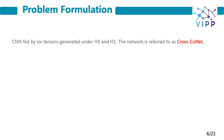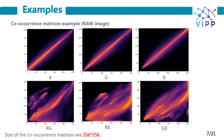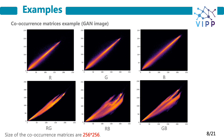Our approach is compared with a recent approach that considers only 3 co-occurrence matrices on RGB, referred to as CoNet. This slide shows one example of an original image with co-occurrence matrices on R, G, and B, and also across the channels RG, RB, and GB.